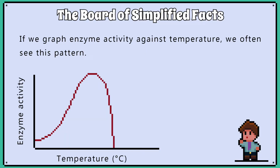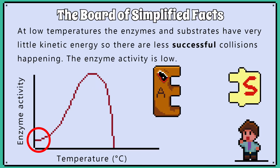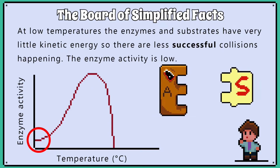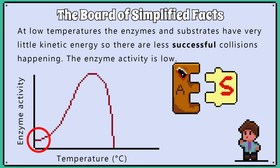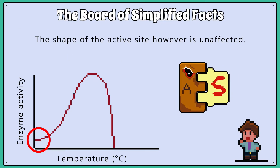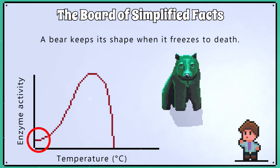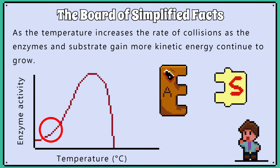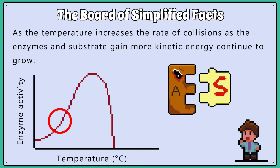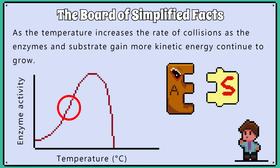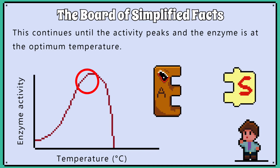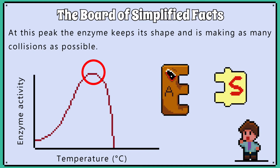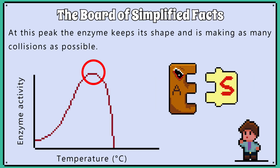If we graph enzyme activity against temperature, we often see this pattern. At low temperatures, the enzymes and substrates have very little kinetic energy, so there are fewer collisions happening and the enzyme activity is low — though the shape of the active site is unaffected. As the temperature increases, the rate of collisions continues to grow as the enzyme and substrate gain more kinetic energy. This continues until the activity peaks and the enzyme is at its optimum temperature. At this peak, the enzyme keeps its shape and is making as many collisions as possible.